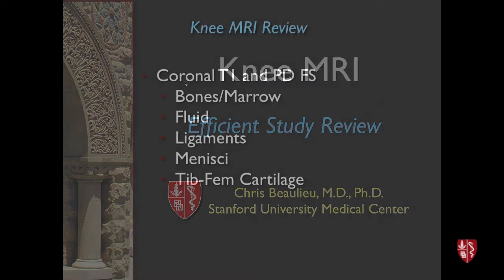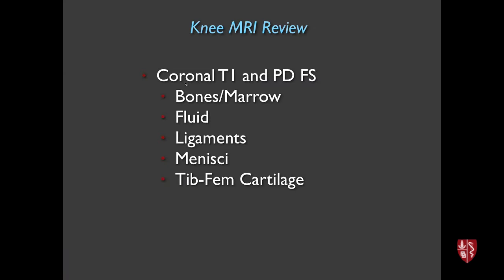When I look at the knee, I go through the coronal images first with an inside-out approach: bones and bone marrow contours, look for fluid or effusion, then ligaments from medial to lateral, then the menisci. Be aware you can see meniscal tears on just one plane — there's a tendency to rely only on sagittal for menisci, but coronal is quite good, and axial can be helpful too. Then I go through the tibiofemoral cartilage in the medial and lateral compartments.